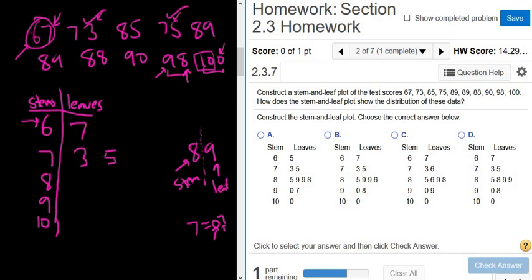For the stem of 8, we have 85, so 5. Then we have 88. Then we have 89 and then 89. So it appears twice, so you have to actually write it twice.